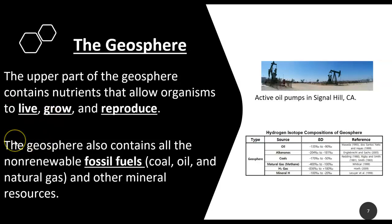The upper part of our geosphere contains nutrients that allow us as organisms to live, grow, and reproduce. The geosphere also contains some of those non-renewable fossil fuels like coal, oil, and natural gas, and also has other mineral resources.